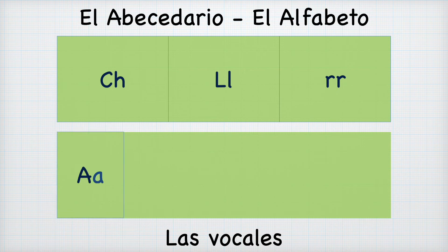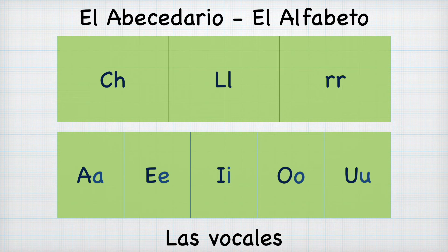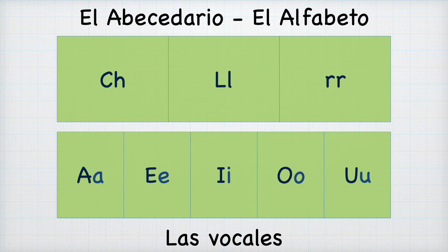Las vocales: A, E, I, O, U. These are super important. They really don't change in a word. So when you're reading a word in Spanish with the letter A, it's going to sound like A. If you're reading a word with the letter O, it's going to sound like O. Let's take a look at some examples.